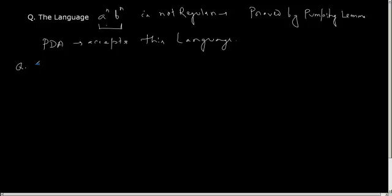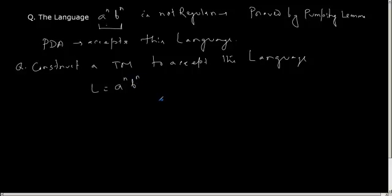So a Turing machine is a superset of every finite automata. It can accept any language, regular language. It can accept a context free language which is accepted by a pushdown automata. So my next question is, construct a Turing machine to accept the language L is equal to a to the power n, b to the power n. If people just give a try I am just coming in two minutes. All right.